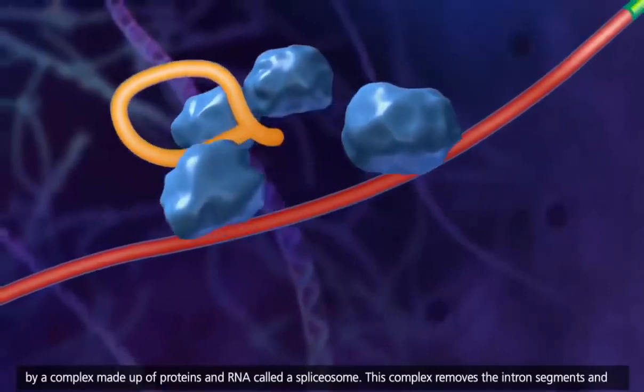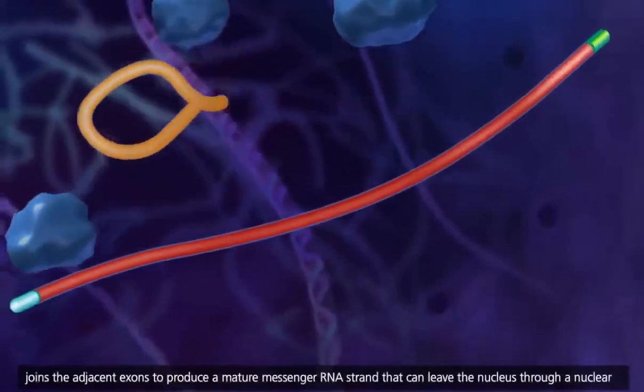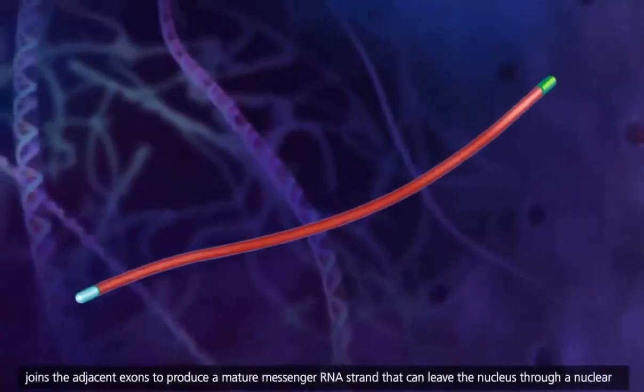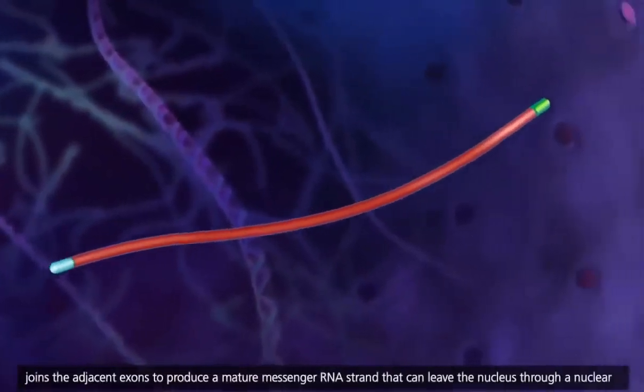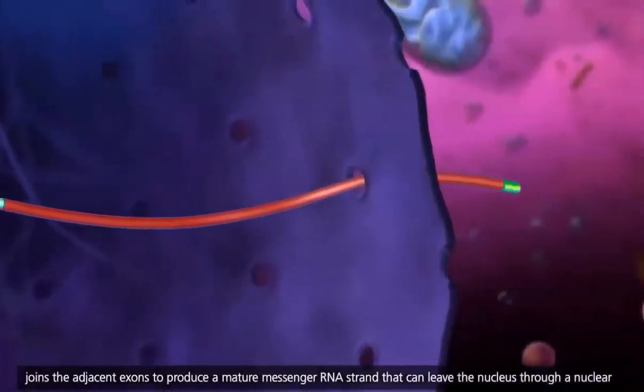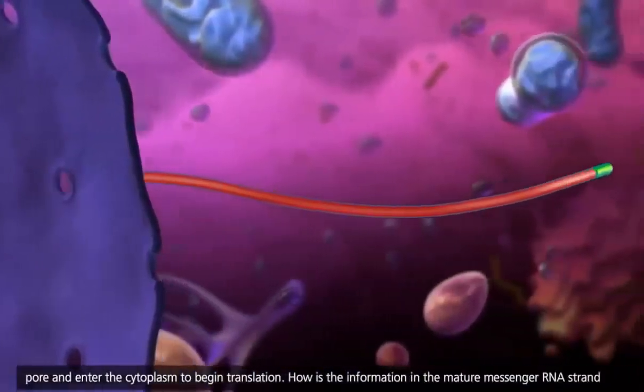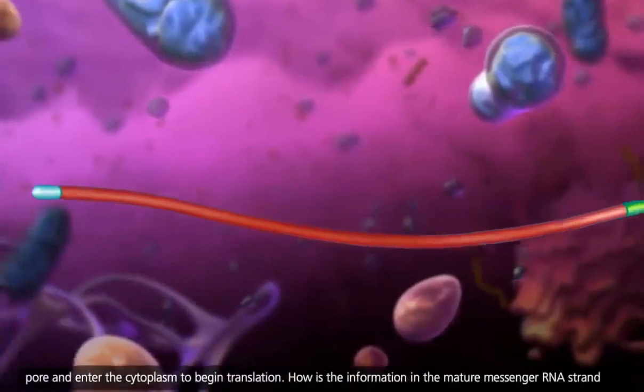This complex removes the intron segments and joins the adjacent exons to produce a mature messenger RNA strand that can leave the nucleus through a nuclear pore and enter the cytoplasm to begin translation.